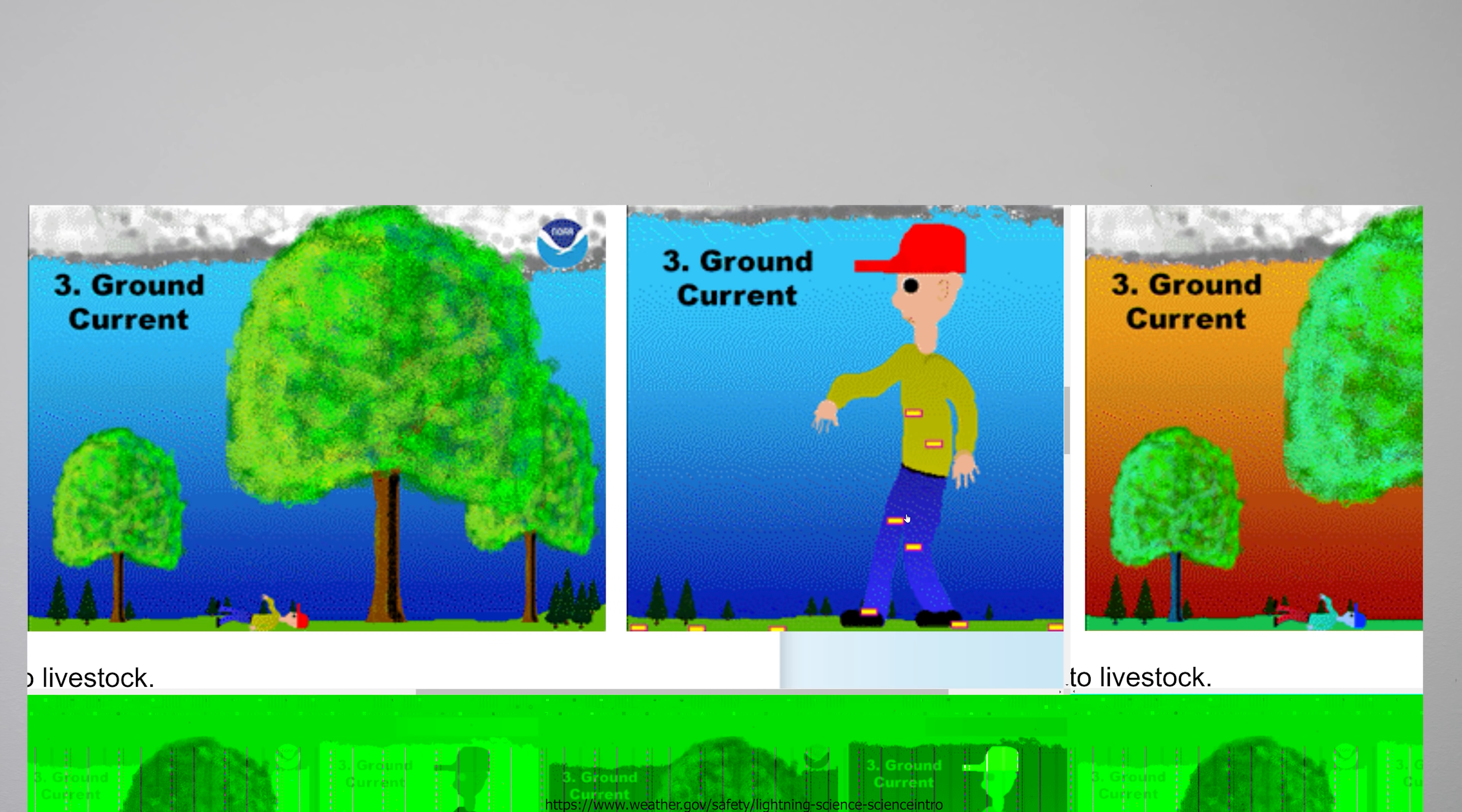Because as the lightning comes down and strikes the tree, what happens is there's a lot of charge on the tree. And that charge needs to go somewhere. So it's going to go into the ground around it. And it's also going to go up into you as well. So that means that in order to get killed or hurt by lightning, you don't have to be the thing that got struck, but you just have to be near the thing that got struck.